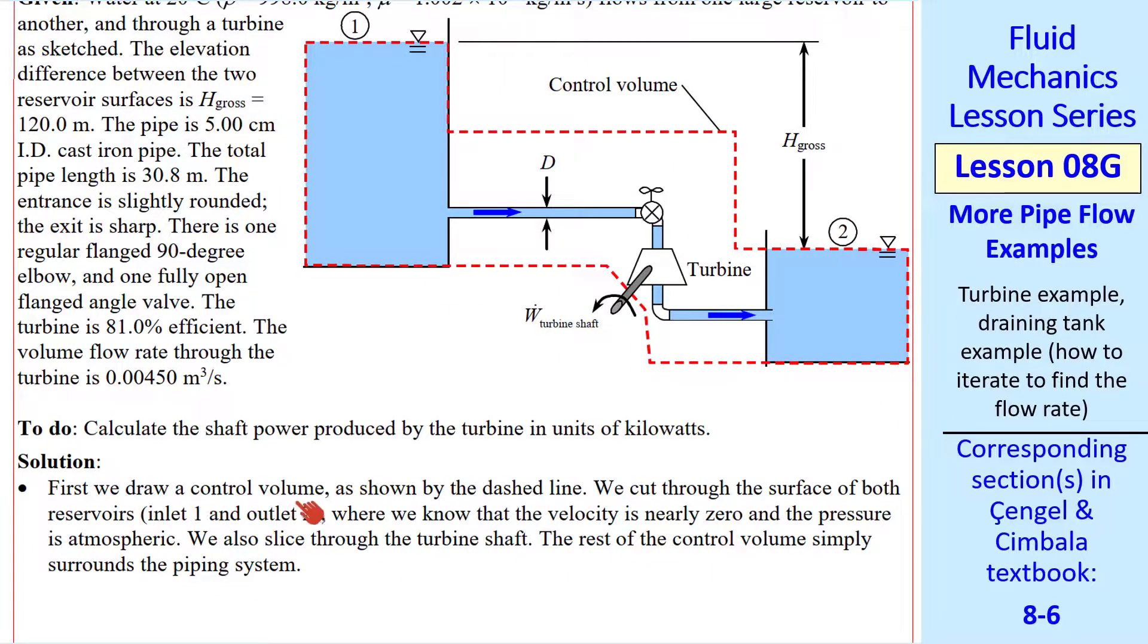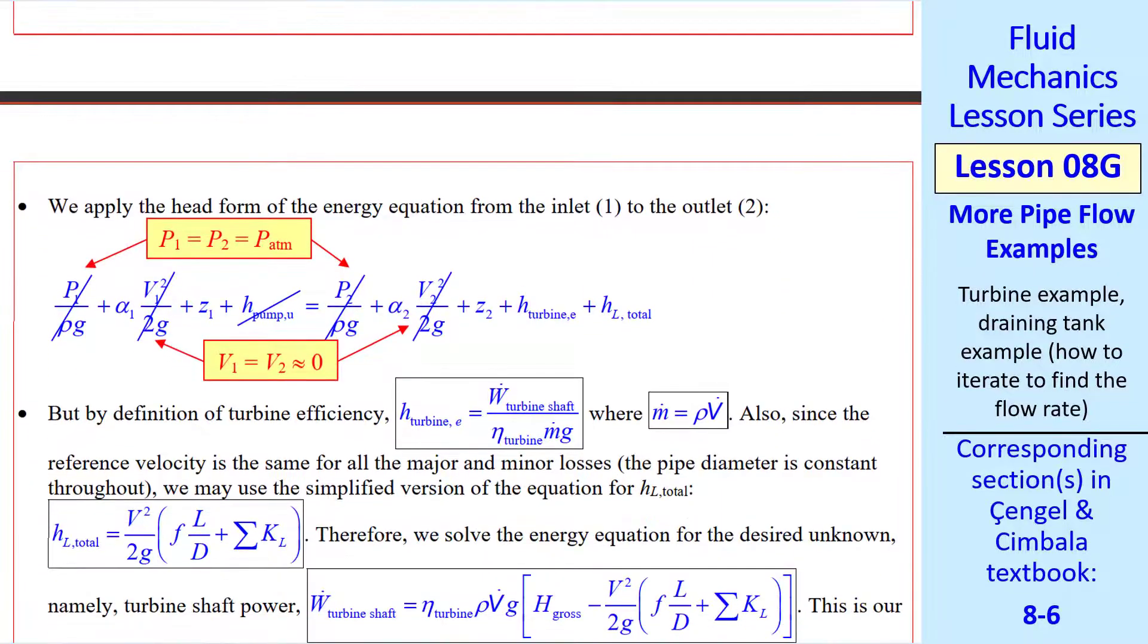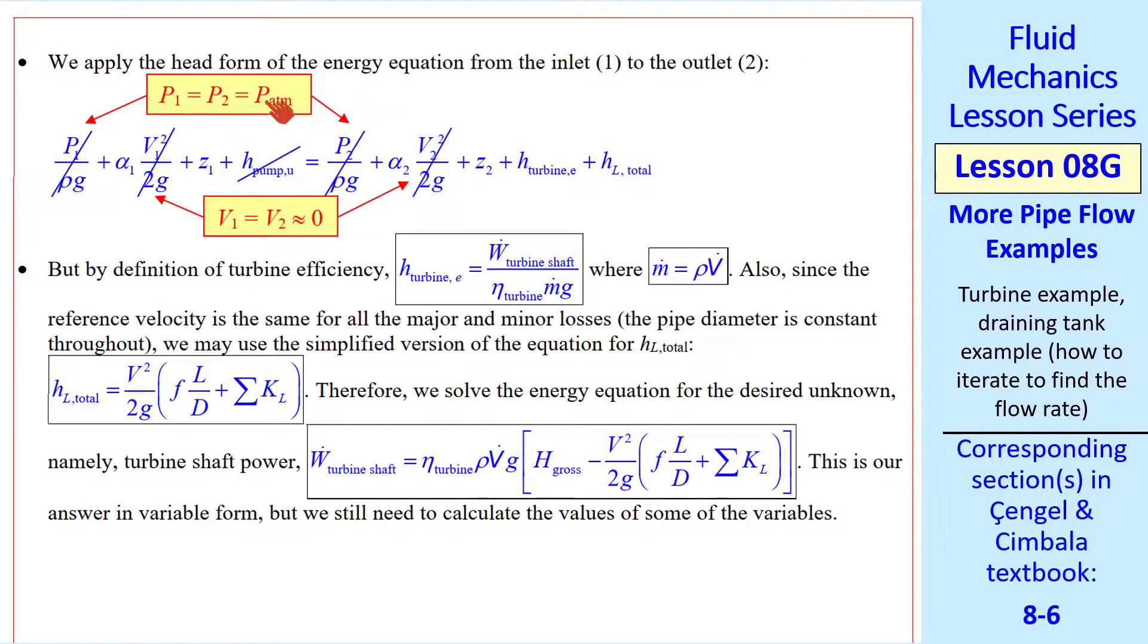First step in all these problems is to draw a control volume. I picked a wise control volume that cuts through the surface of the water in both tanks and cuts through the shaft of the turbine and encompasses all our other pipe flow components. Next we apply the head form of the energy equation from inlet to outlet. Since both P1 and P2 are atmospheric pressure by wise choice of control volume, these two terms cancel. Also V1 and V2 are nearly zero since these are large tanks at the inlet and outlet. There's no pump in this problem, but there is a turbine, and there is elevation difference. And there are of course head losses, both major and minor.